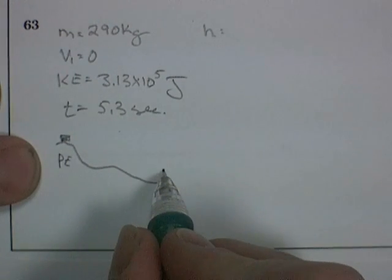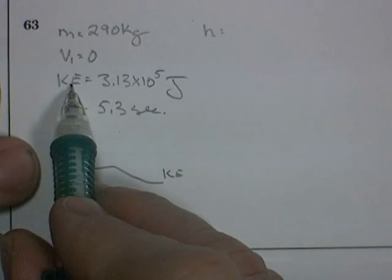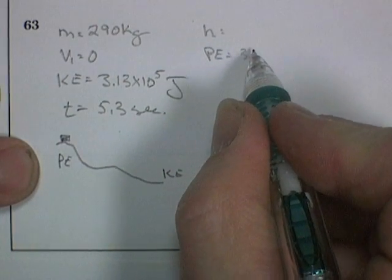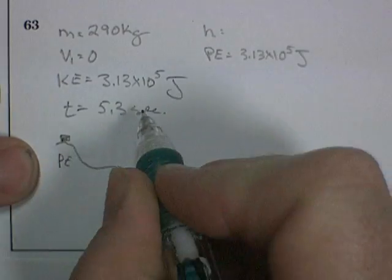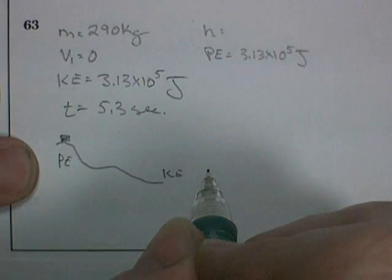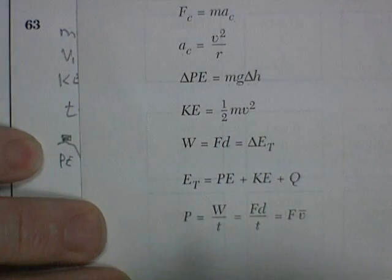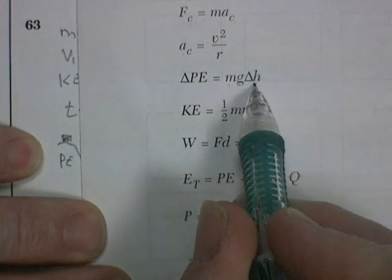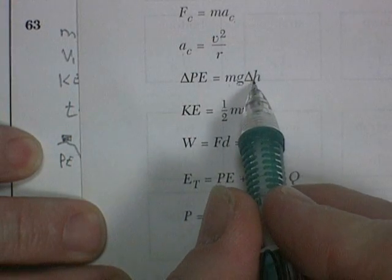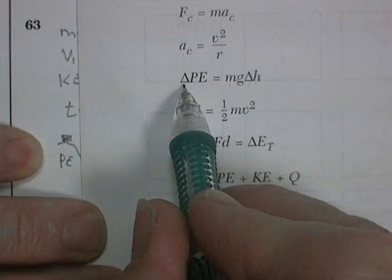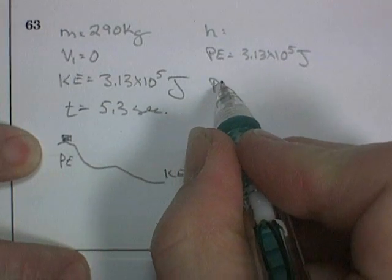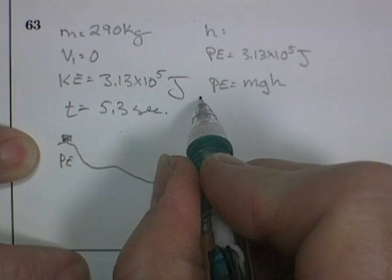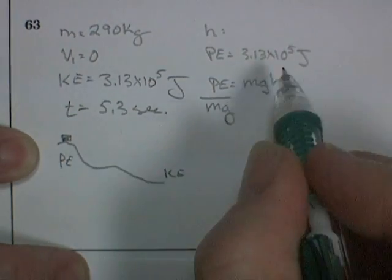So all of the potential energy at the top changes into kinetic energy at the bottom. Well, we know its kinetic energy at the bottom, so we can also say that its potential energy at the top must have been equal to 3.13 times 10 to the 5 joules. Where would it have gotten that kinetic energy from? It had to get it from potential. So let's find the equation for potential energy. Change of potential energy is equal to mg times the change in height. As we drop height, we gain kinetic energy from the change in potential energy. So we can write that our potential energy is equal to mg times the height we started at. We want to know height, so we divide both sides of the equation by mg. So now we've got an equation for height.